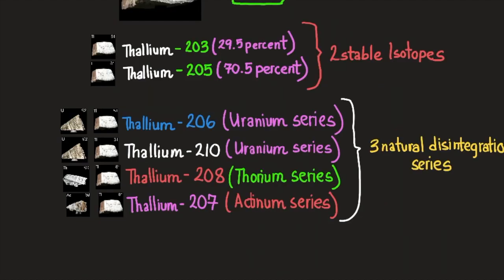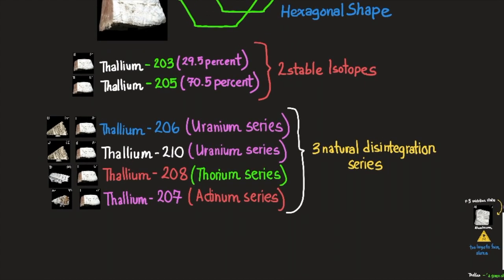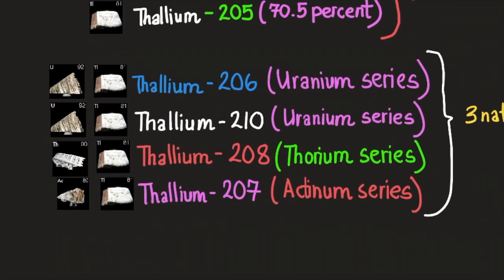Thallium-206 and thallium-210, which are part of the uranium series. Thallium-208, which is part of the thorium series, and thallium-207, which is part of the actinium series. Here they are.